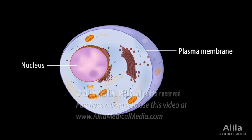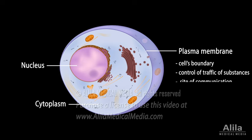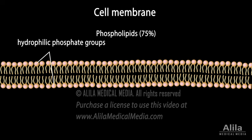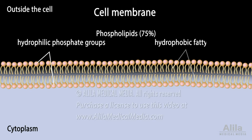The plasma membrane serves as the cell's boundary, controlling the traffic of substances in and out of the cell. It is also the site of communication between the cell and its environment. The membrane consists mainly of two layers of phospholipids with their hydrophilic heads — the phosphate groups — facing the aqueous environments inside and outside the cell, and their hydrophobic fatty acid tails facing in together.